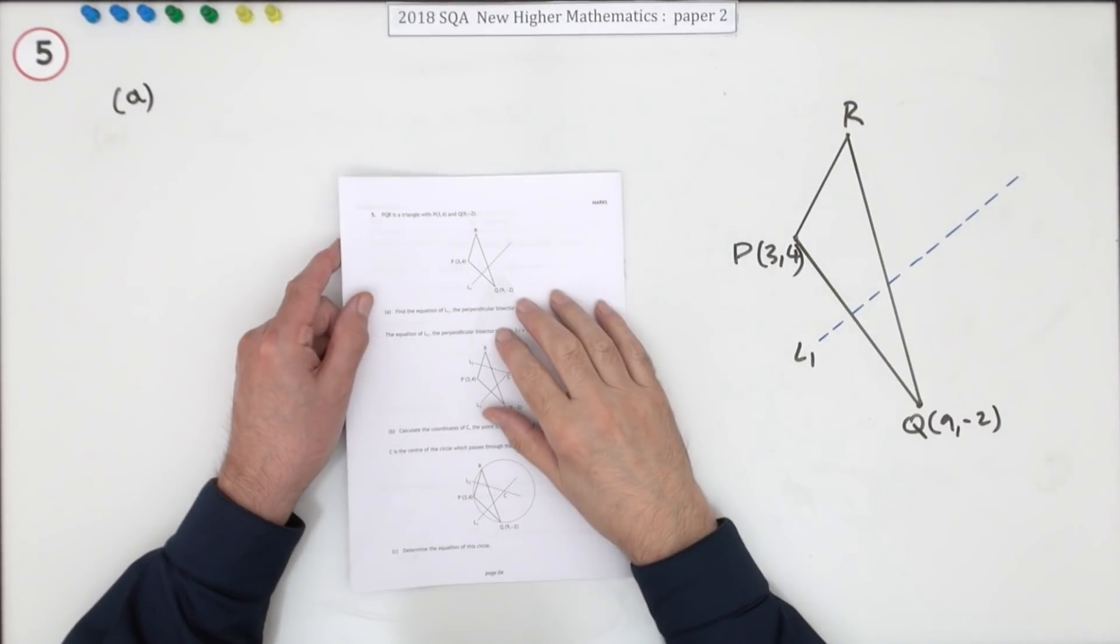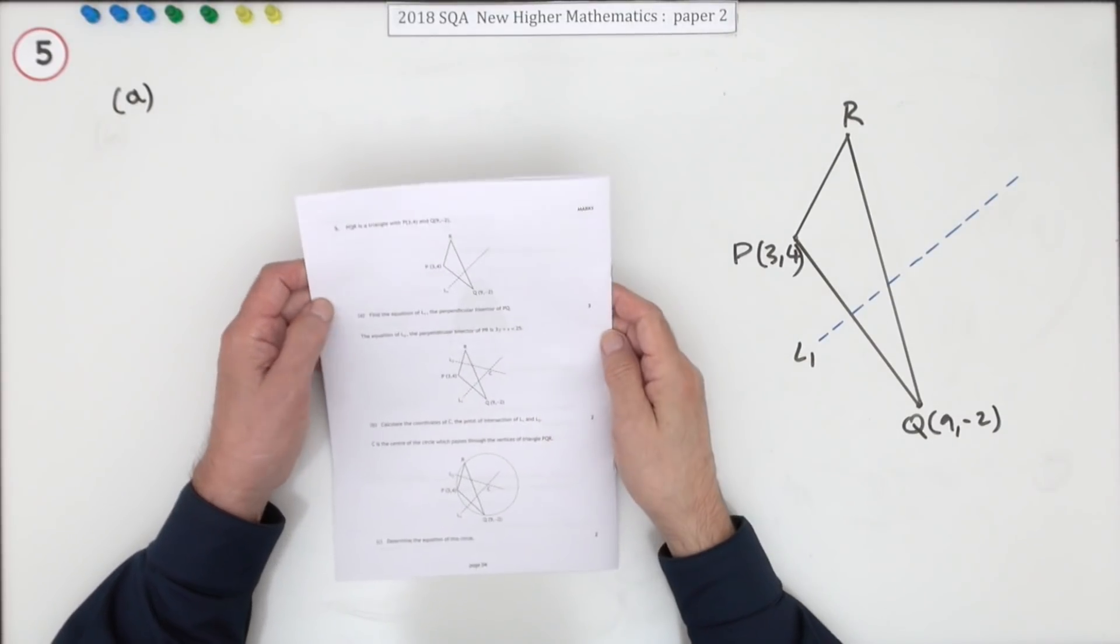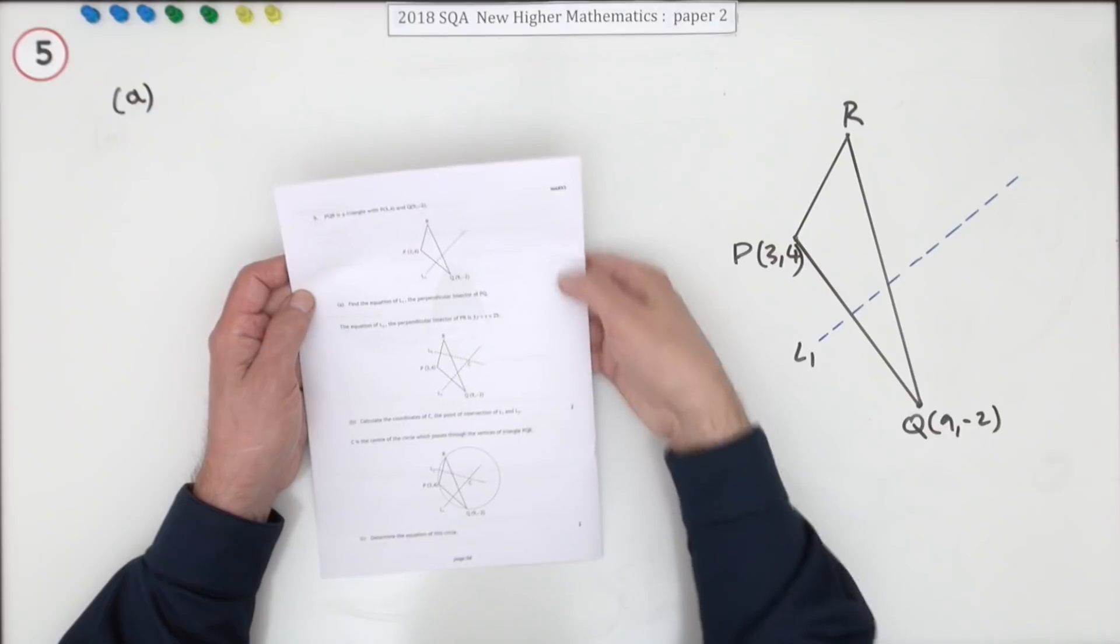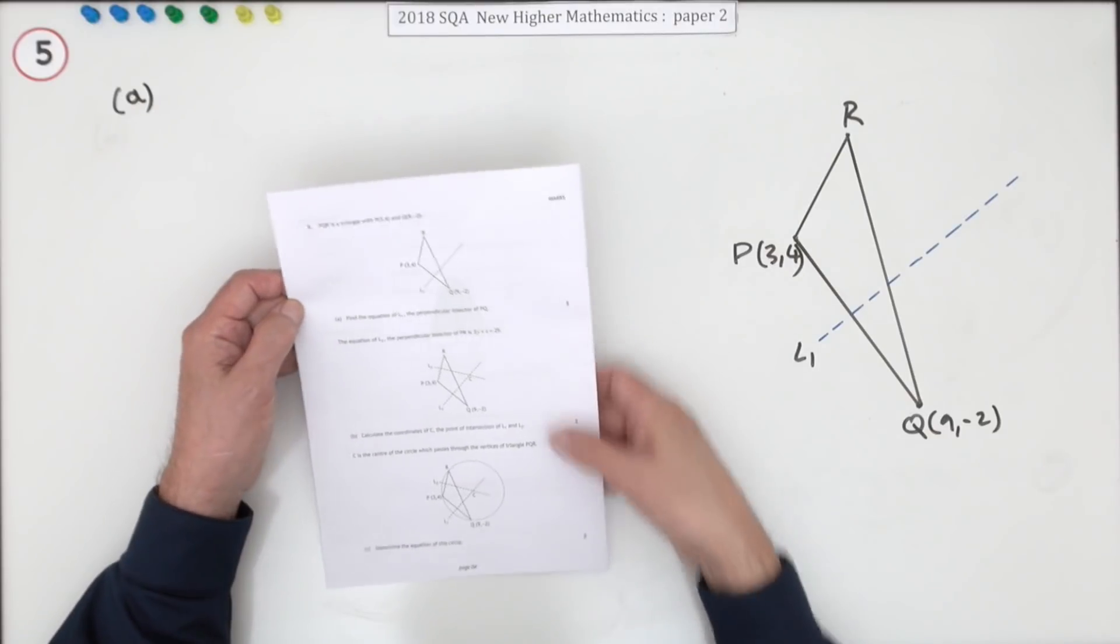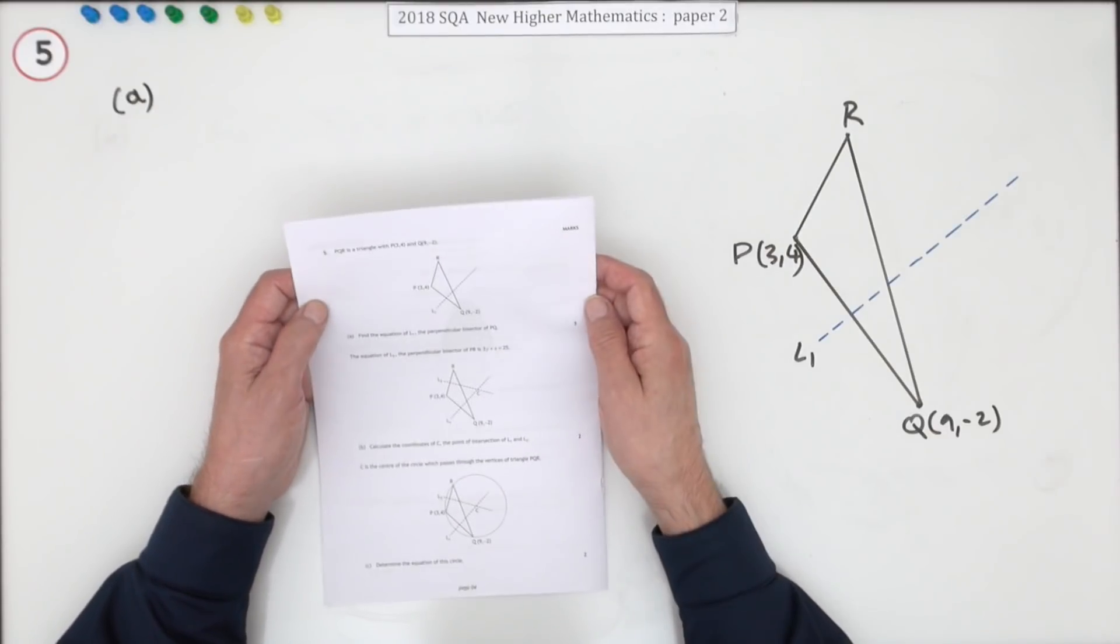Question five from the 2018 SQA Higher Maths paper. Two lines in a triangle. Seven marks here in three parts. Steps you through it.